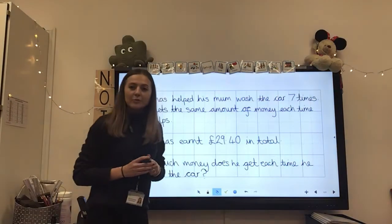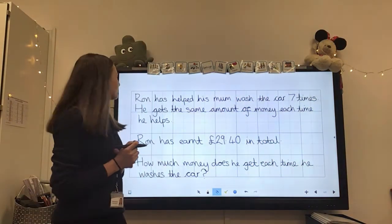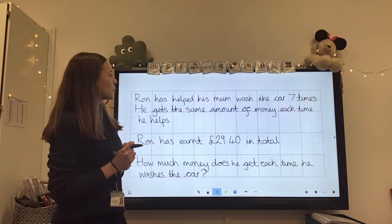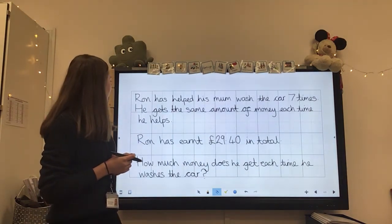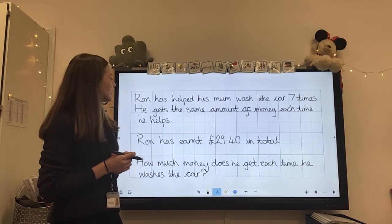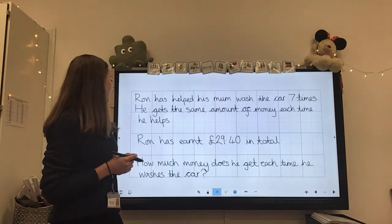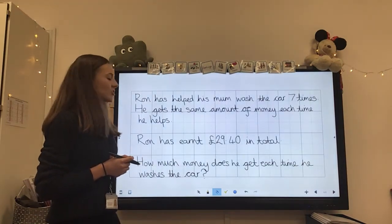Okay, so the first problem we're going to be looking at together is this one. Ron has helped his mum wash the car seven times. He gets the same amount of money each time he helps. Ron has earned £29.40 in total. How much money does he get each time he washes the car?